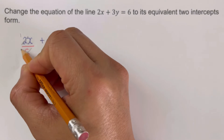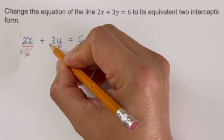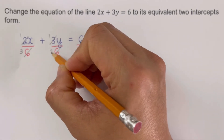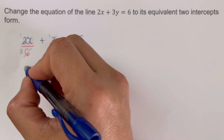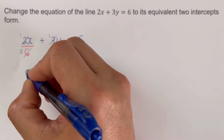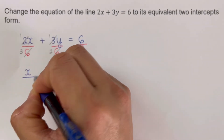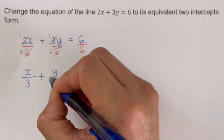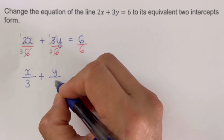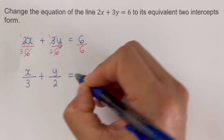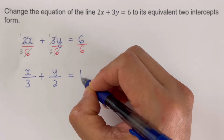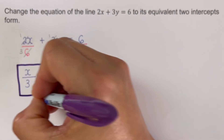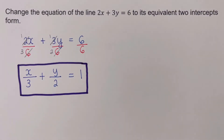Simplifying: there is one 2 in 2 and three 2s in 6, and one 3 in 3 and two 3s in 6. So we rewrite this as x/3 + y/2 = 1, since 6/6 = 1. This is the equivalent two-intercepts form of the standard form 2x + 3y = 6.